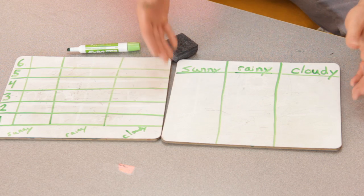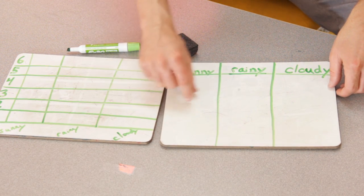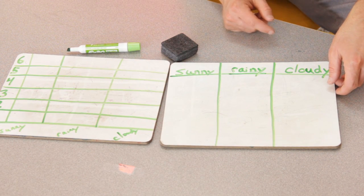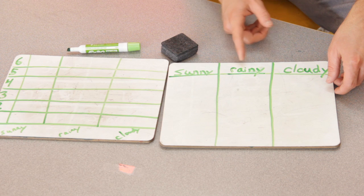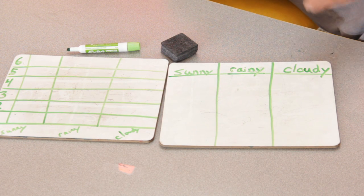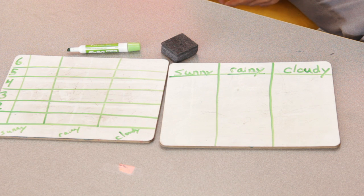So they come in and they answer the daily question. You'll have something like this, and they'll move their name cards to answer the question: what is the weather like today? Sunny, rainy, cloudy — and on the chart paper, or on the smart board, or on the white board, or wherever you keep track of this, you'll have room for more options. This is just an example of how you would set it up. And then once you get the responses in and the kids have voted, it looks like today most of you think it's a rainy day. So let's go to our graph and graph that.